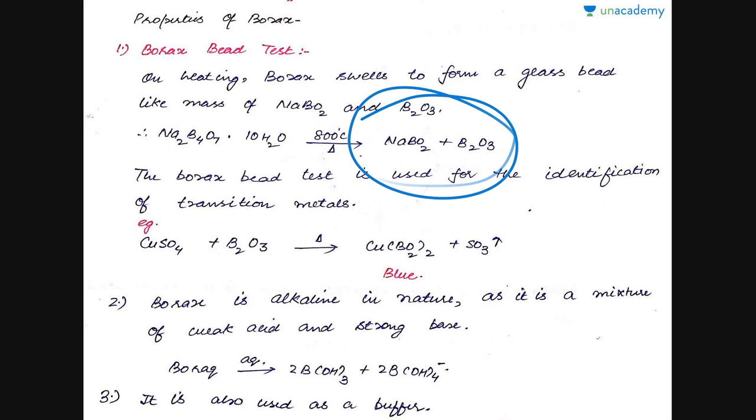This particular compound, a mixture of sodium borite and B2O3, is known as bead, the borax bead. This bead has a characteristic color for particular metal ion whenever it is treated with the solution of that particular metal ion.